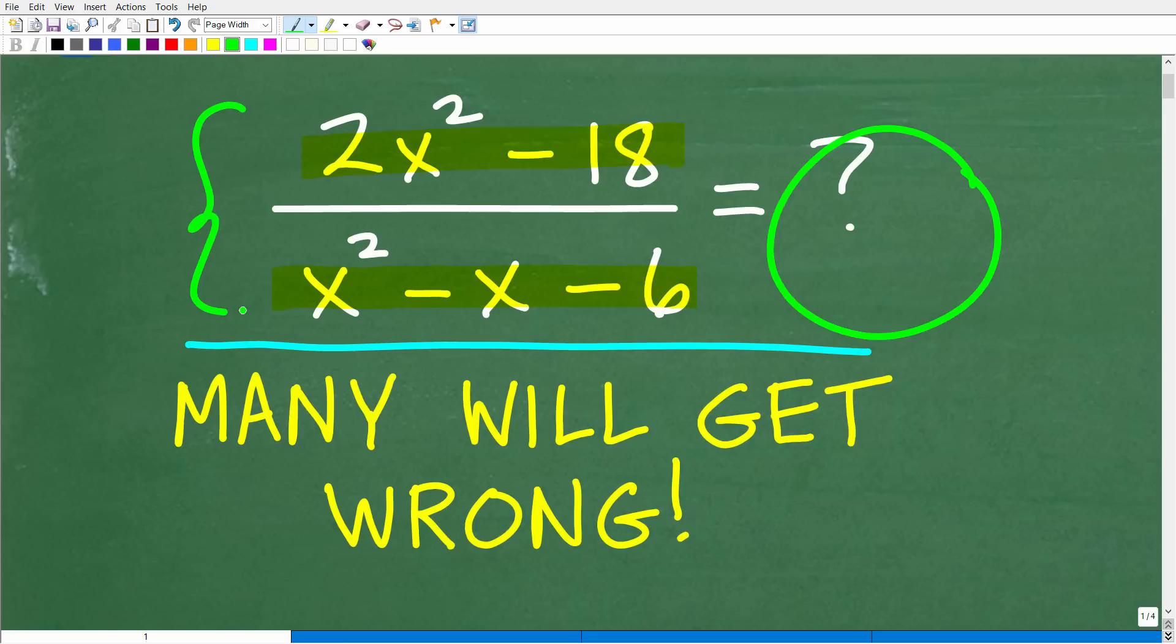Now, a rational expression is effectively a fraction where the numerator and denominator are polynomials. But even if you didn't know that this was called a rational expression, if you have these critical algebra skills, you should be able to do this problem pretty easily.